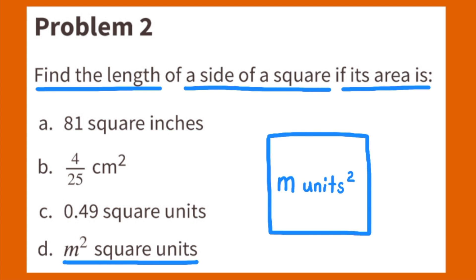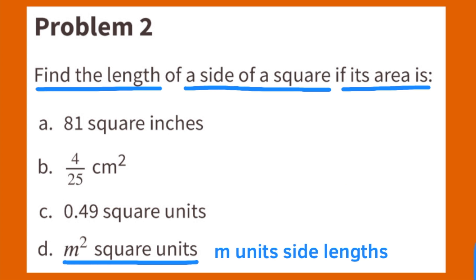If the area of a square is M units squared, then its side lengths must be M, because M times M is M squared, or M units squared. Square D has M units side lengths.